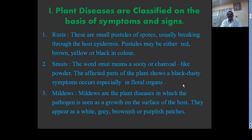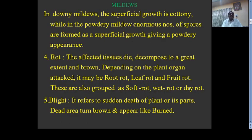Mildews are plant diseases in which the pathogen is seen as a growth on the surface of the host. They appear as white, grey, brownish, or purplish patches on the host surface. Mildews consist of two types: downy mildew and powdery mildew. In downy mildew, the superficial growth is cottony, while in powdery mildew, enormous numbers of spores are formed as a superficial growth giving a powdery appearance.